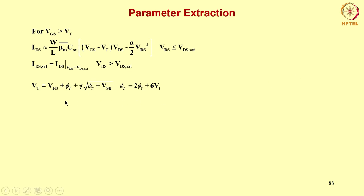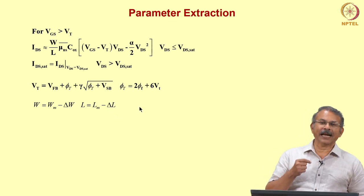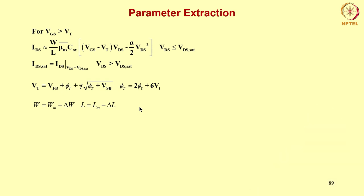To predict the threshold voltage as a function of substrate bias, we need the flat band voltage Vfb, the parameter phi_t which is twice phi_f plus 6V_T, and the body effect parameter gamma. As for W and L values, what we observe in a microscope or from the top view are the mask parameters Wm and Lm — the gate length and gate width realized in photolithography. However, the actual channel width and channel length of the MOSFET are different from the mask lengths Wm and Lm.